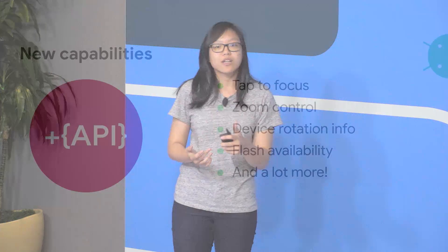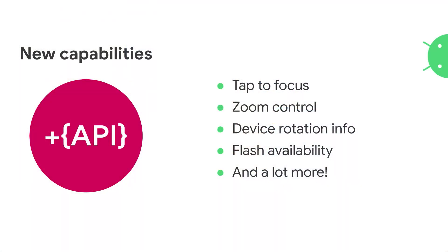Jumping into the new capabilities we've been working on — in terms of new APIs, we really wanted to listen to the developer community to figure out what would help most in developing features for your camera apps. Some of the main features we were able to implement include tap-to-focus, zoom control, device rotation info so you can better handle different configurations on your apps, flash availability based on lens — querying whether a specific camera lens has flash capability — and a lot more.